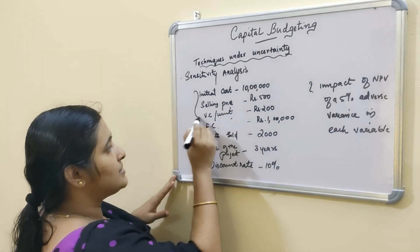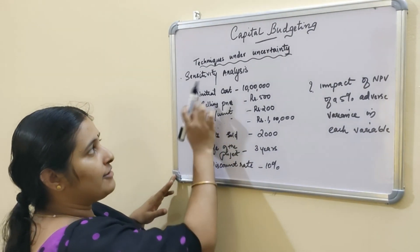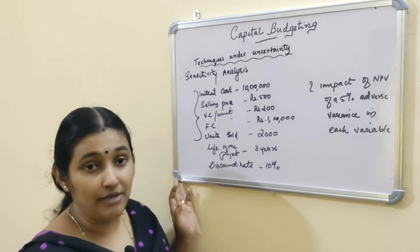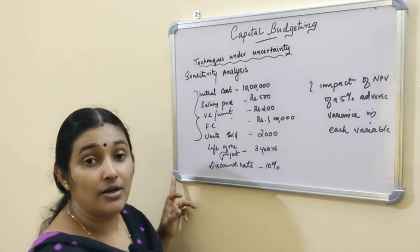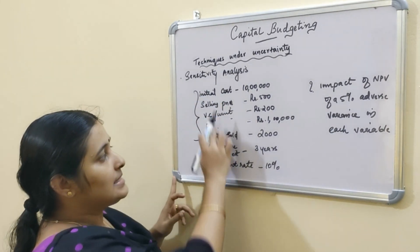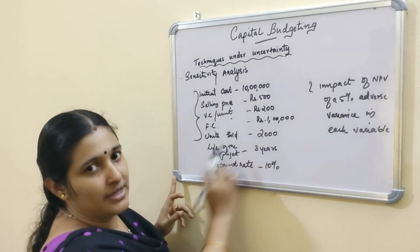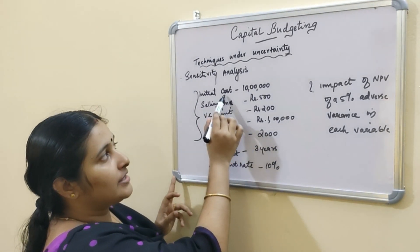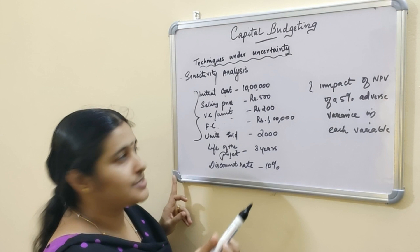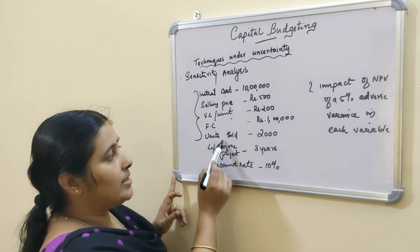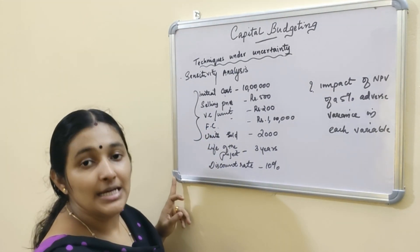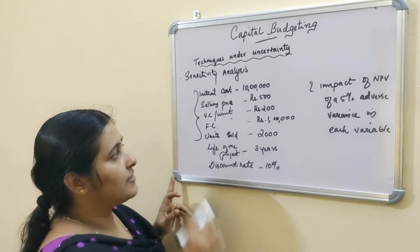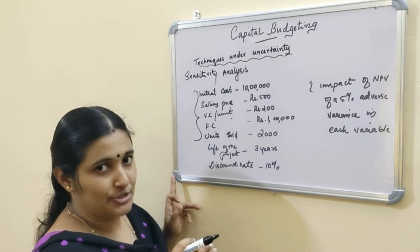There are 5 variables, and we need to find the effect on NPV of a 5% adverse variance in each of these variables. For cost variables, an adverse effect means cost must be increased. For selling price and number of units sold, an adverse effect means these must be decreased. For variable cost and fixed cost, an adverse effect means these are to be increased.